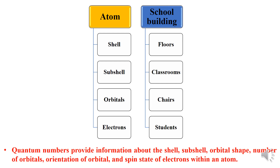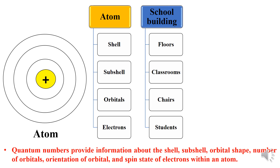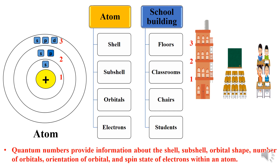So an atom has shells, within the shells you find subshells, and within subshells you find orbitals which are occupied by electrons. Analogously, a school building has floors, each floor has classrooms, each classroom has chairs, and the chairs are occupied by students. The chairs represent the orbitals, and the chairs occupied by students represent the orbitals occupied by electrons. Quantum numbers provide information about the shell, subshell, orbital shape, number of orbitals, orientation of orbitals and spin state of electrons within an atom.